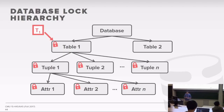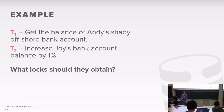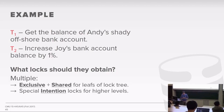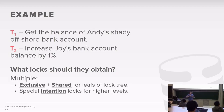So you can have a database, which has tables, the tables have tuples, and the tuples have attributes. If a transaction comes along and locks the table, that implicitly locks everything below it in the hierarchy. If we want to do a very large update, instead of getting a lock on an individual tuple, we get a lock on the table or a page—that covers a larger segment with fewer invocations of the lock manager.